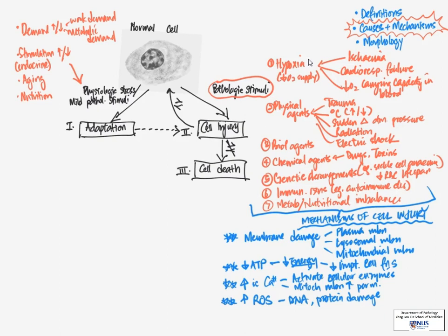Now, there are certain types of the causes you can see here that are more prone to specific mechanisms of cell injury. For example, in membrane damage,